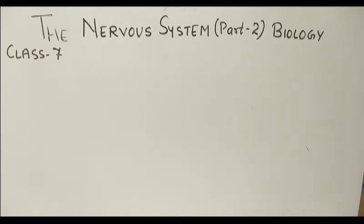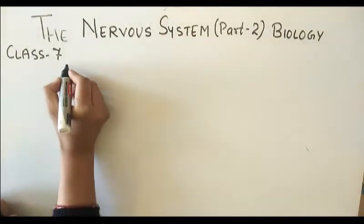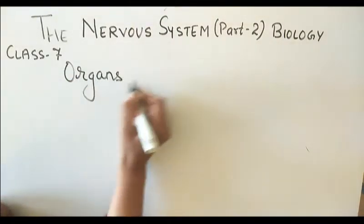Hello everyone, I am Anuja Srivastava and today I am going to teach you the second part of chapter: The Nervous System in Class 7th biology. In the previous video I already discussed what the nervous system is and how neurons transmit messages. In this video I am going to teach you about the organs of the nervous system — that means whatever organs make up the nervous system.